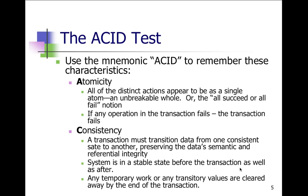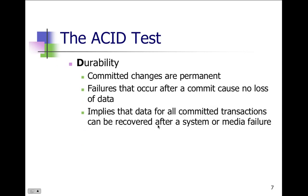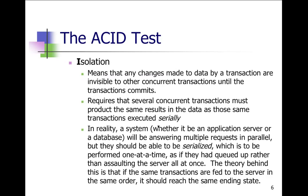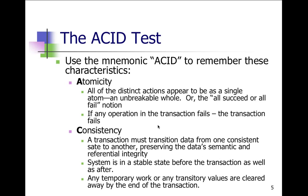Most people have heard of the ACID test. This is a review of the concept because we're dealing with transactions — it's not a bad idea to think about good quality transactions. The mnemonic is ACID: A stands for Atomicity, C is Consistency, I is Isolation, D is Durability — ACID. It's a way of testing quality to make sure your application is following good transaction techniques, especially once you've designed it.